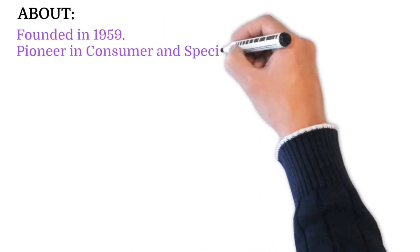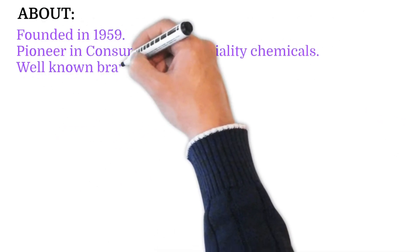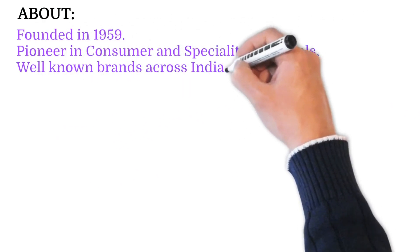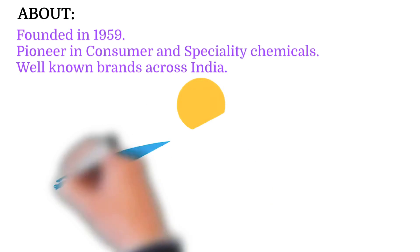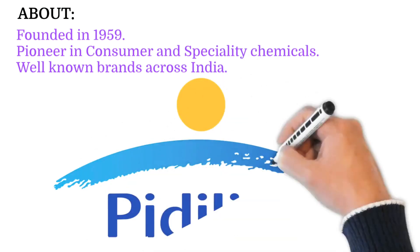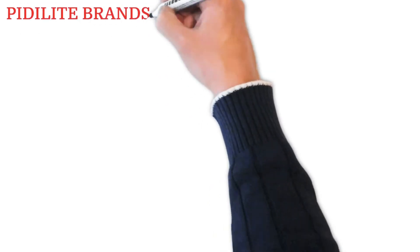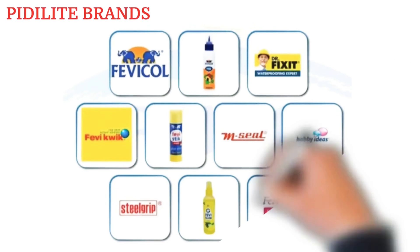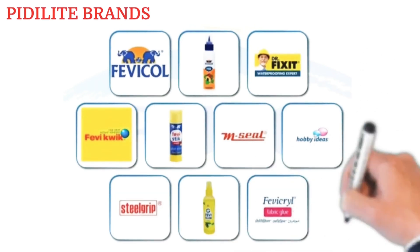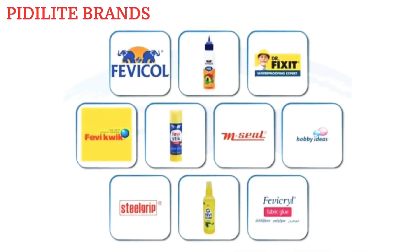Hello friends, welcome. Today we are going to talk about a company which was founded in 1959, which is a pioneer in consumer and specialty chemicals. It has well-known brands across India — it's one of my favorite stocks. It's none other than Pidilite. When I said well-known brands across India, let's look at the Pidilite brands. If you are staying in India, you cannot deny that you have never seen these brands — they are so famous that you must have used them at least once or twice in your life.